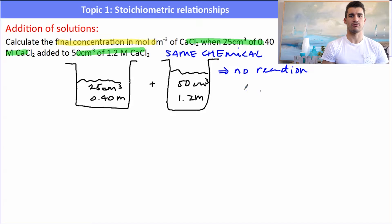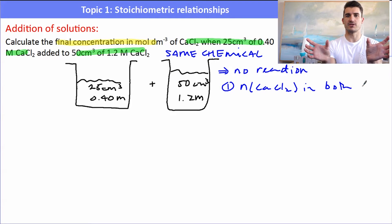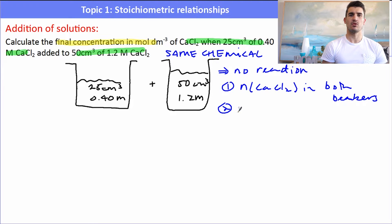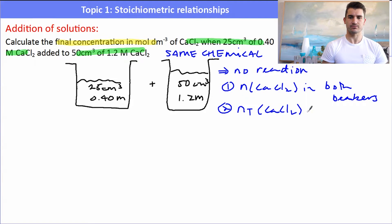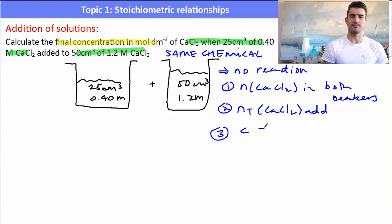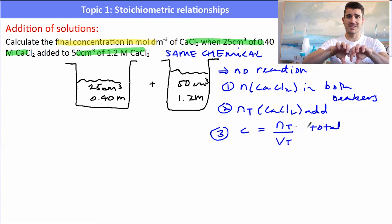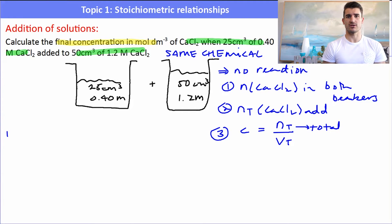The steps are really important. First, calculate the number of moles of CaCl₂ in both beakers — beaker 1 and beaker 2. Once you've got the moles in both beakers, add them together to find the total number of moles. Then calculate the concentration: total moles divided by total volume, because when you tip the two solutions together the volume increases as well.